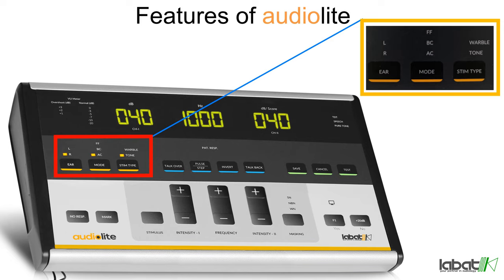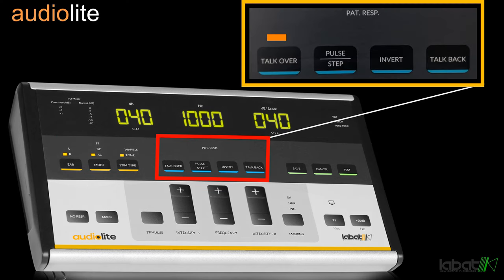Stim Type is used to change the stimulus tone type in warble or in tone. Pulse or Step is used to give stimulus tone type in pulse or in steps.